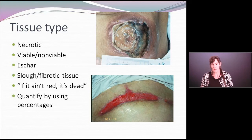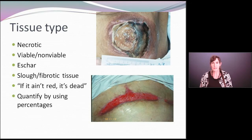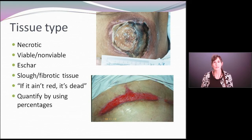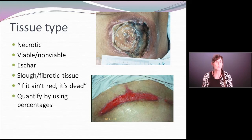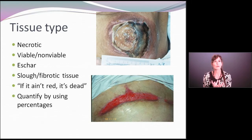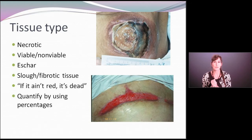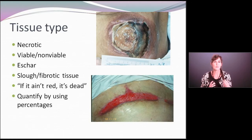The wound on the bottom is 100% granulating — very, very clean. But if that wound on the bottom had slough covering about half the surface, I might describe that as 50% granulation, 50% slough. So it's very important to eyeball that wound and try to quantify the amount of tissue. Is it 75% necrotic, 25% granulating? Is there 10% slough? Is there 90% granulation? Try to be as precise as you can.